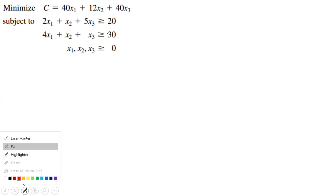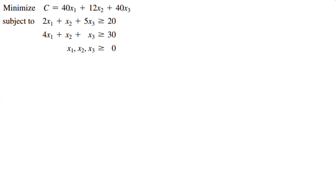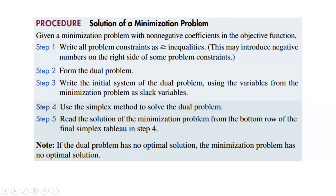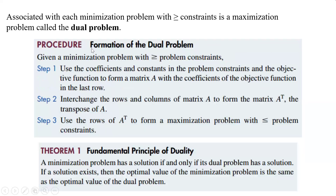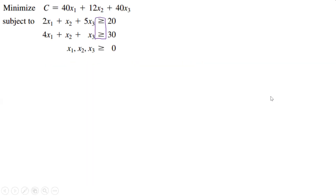The key here is once we do this, notice these are all greater than or equal to. What we need to do is we're going to end up getting them to be going the other direction and solving that kind of problem. So first things first, we have to follow the steps. We have to form that dual problem. So we have to write this into a matrix A and then find the transpose. So step one is we say A is equal to what?